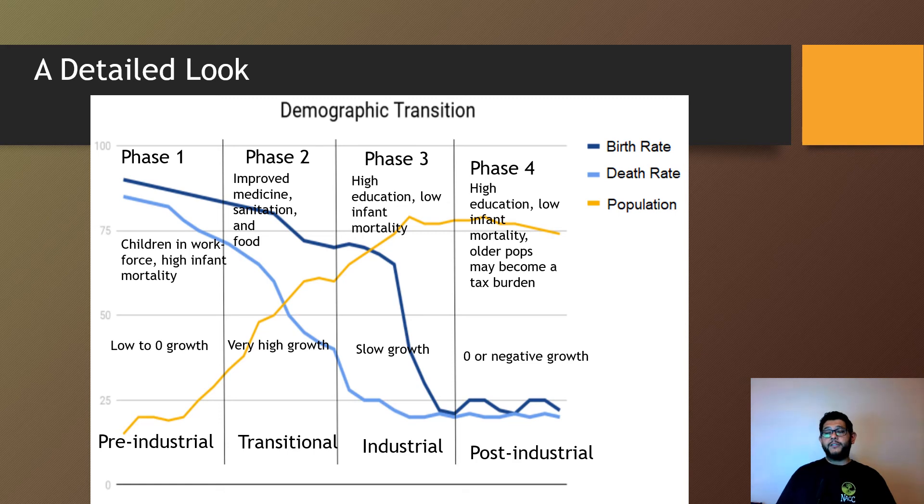Finally, when we get to phase four, you get high education, very low infant mortality, and populations starting to age and potentially become a tax burden as we mentioned earlier. There tends to be zero growth or almost negative growth, and that's what we call the post-industrial phase.